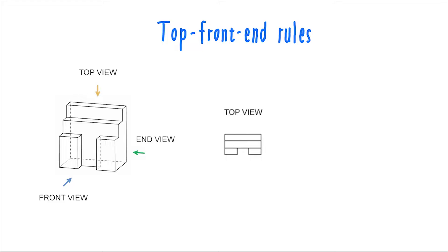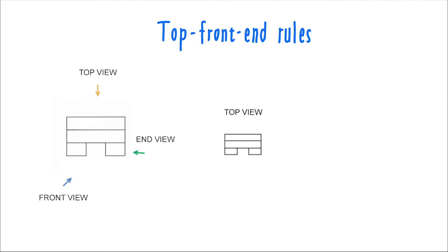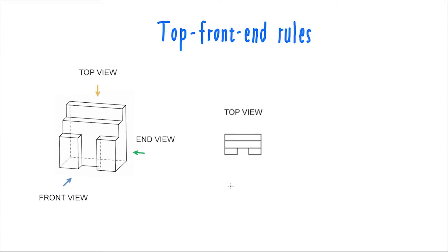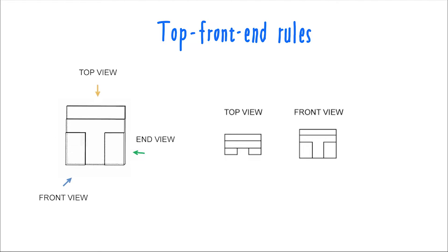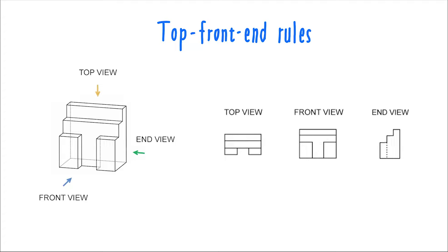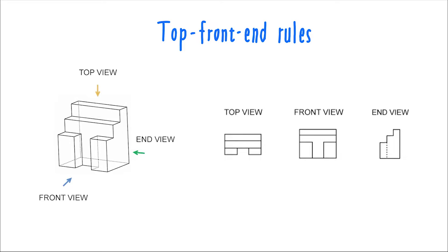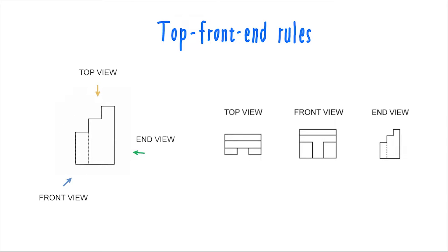The top view shows the object directly from above, with the front of the object positioned at the bottom of the view. The front view shows the object straight on, and the end view always shows the object from the right side, directly from the right.